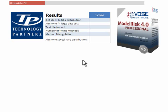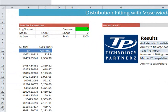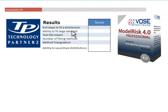Welcome back. Here we are for distribution fitting with Vose Model Risk Professional version 4.0. We have our dataset — one with 50 trials and a larger dataset with 150,000 trials. We're going to fit both of these and see how many steps it took, how we handle fitting larger datasets, whether we can get data from a text file or database, the number of fitting methods, fitting triangulation, and the ability to save and share distributions.